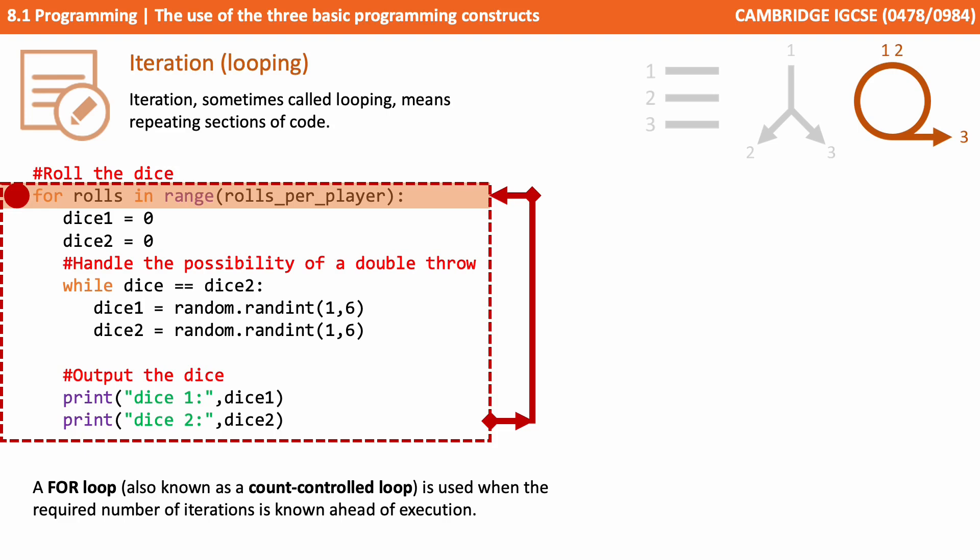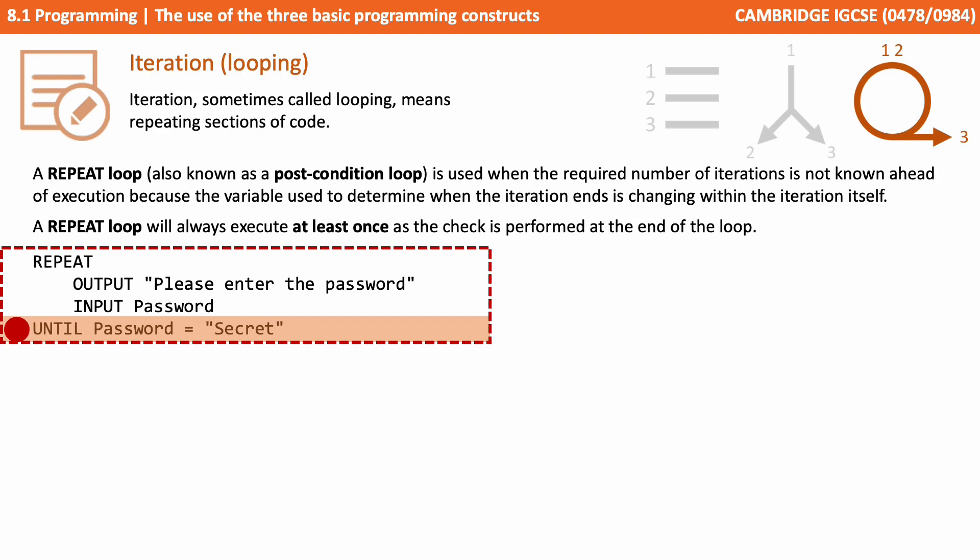So here we've got 'for roles in range roles per player.' Well, roles per player was a constant we set to 2, so this is saying for roles in range 2, it's telling us to run this loop twice. We know how many times we want to run it. When we get to the bottom of the for loop, it reverts back to the top.